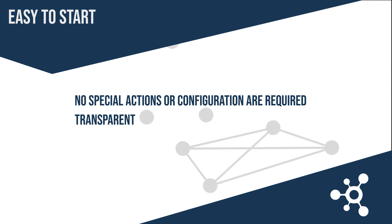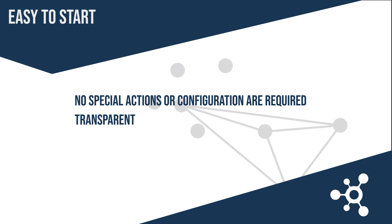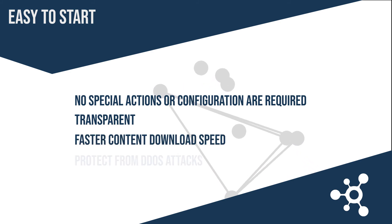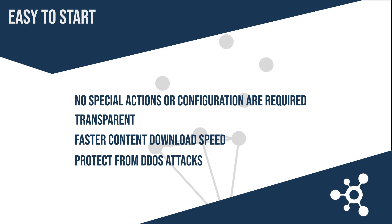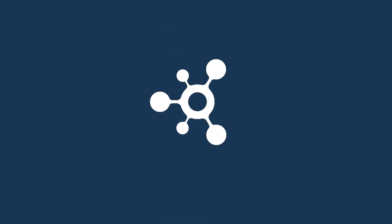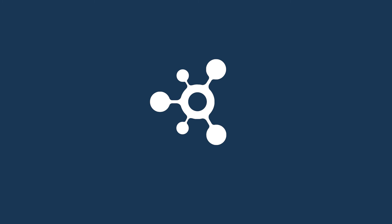If the end user does notice a difference in the app, it will only be a positive one: faster content download speeds, a more reliable and stable data connection, and greater ability to send or receive content regardless of censorship, blocking, or cyber attack attempts. To sum up, NewNode addresses the shortcomings of existing CDNs by enabling content to be distributed and delivered to users in a manner that circumvents connection issues ranging from network congestion to government censorship. NewNode protects application infrastructure from DDoS attacks and has strong encryption mechanisms. NewNode also has the ability to hide data transfer from DPI, or deep packet inspection systems, and other methods used to control internet traffic.